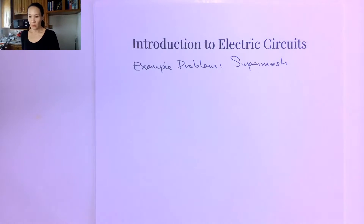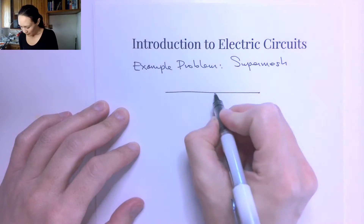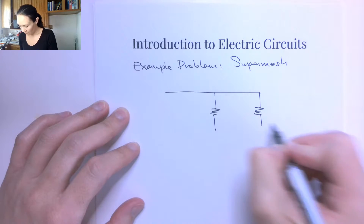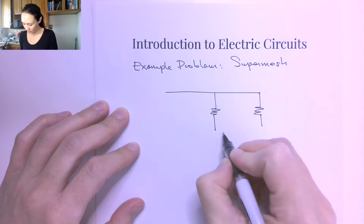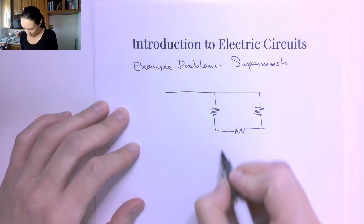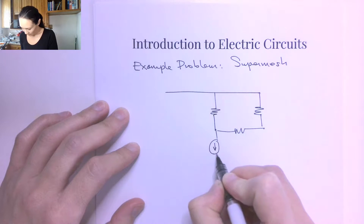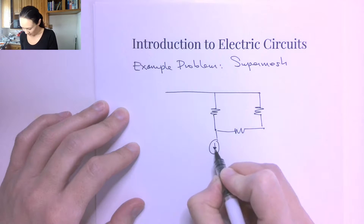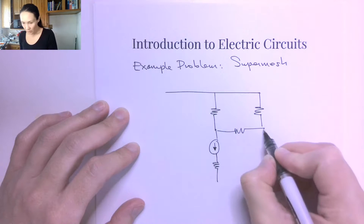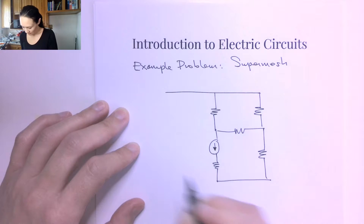I want to show you an example problem using the mesh current method when we have a current source in the circuit. When that happens, we call it a super mesh, and we've got a cool technique for solving. Let me show you an example circuit where that happens.